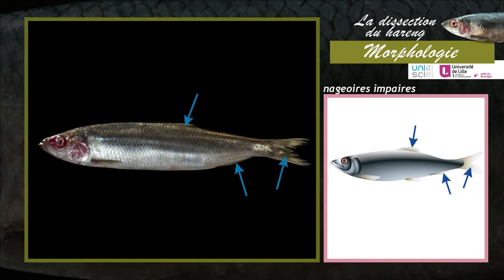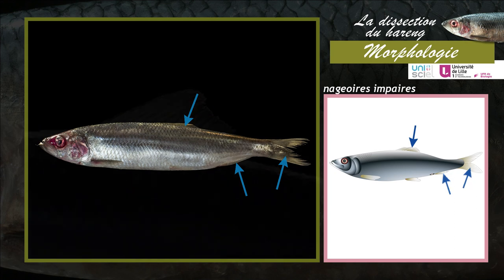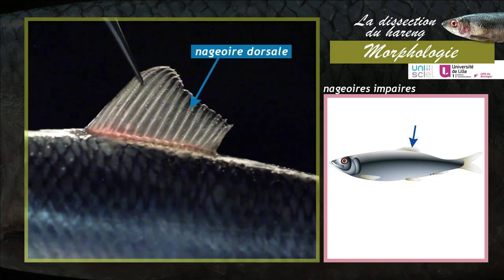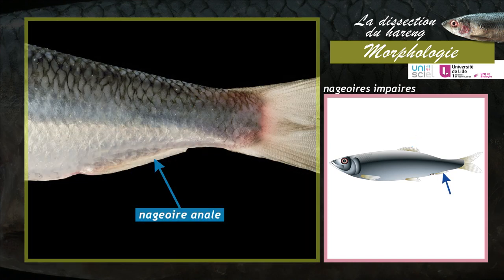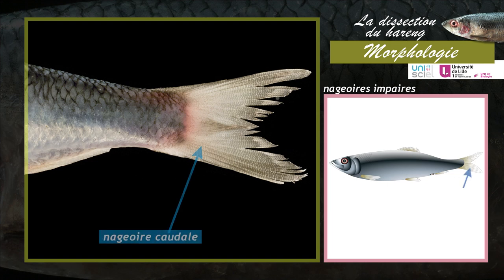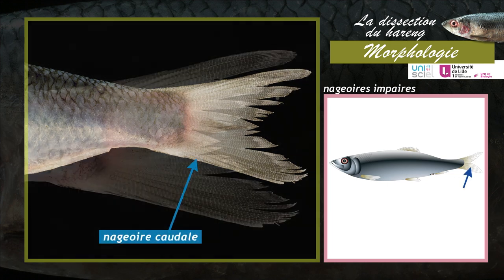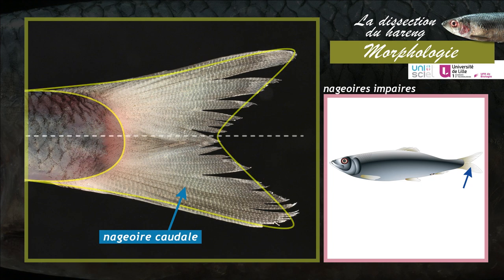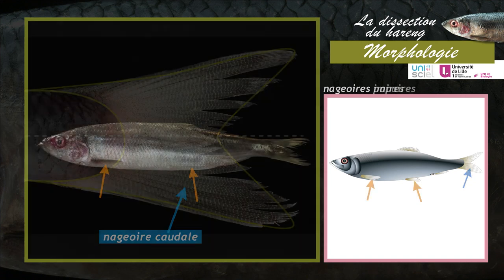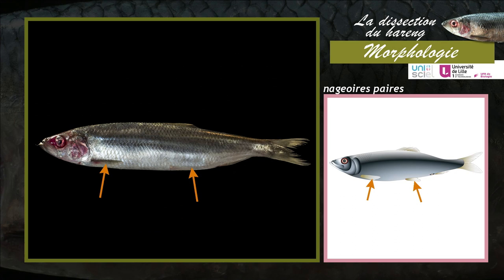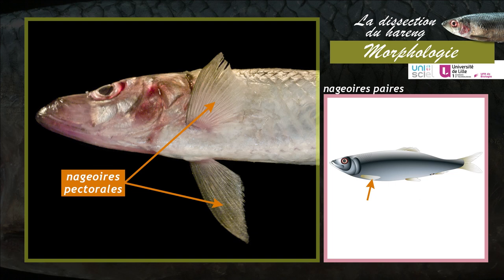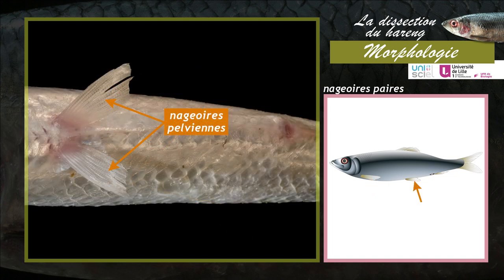Les nageoires impaires sont situées sur le plan médian de l'animal. On distingue la nageoire dorsale, la nageoire anale située derrière la papille anogénitourinaire, et la nageoire caudale. La nageoire caudale homocerque est formée par deux lobes égaux et symétriques. Le hareng porte deux couples de nageoires paires : les nageoires pectorales, situées derrière les opercules, et les nageoires pelviennes, situées ventralement à l'avant de la papille anogénitourinaire.